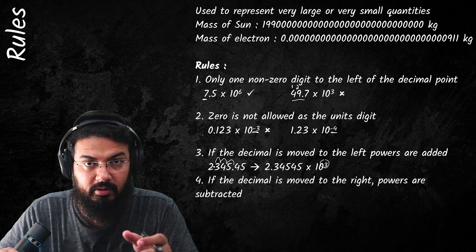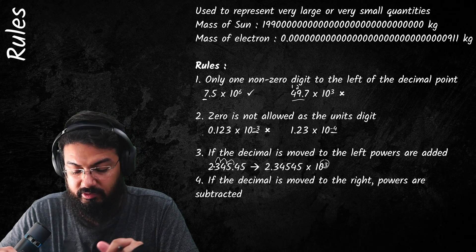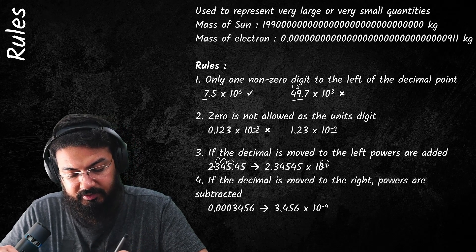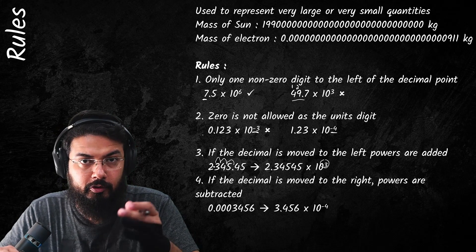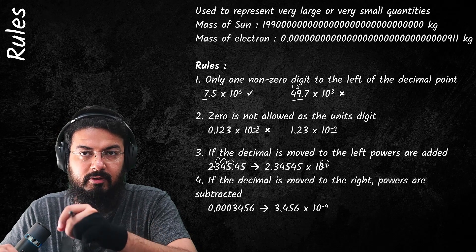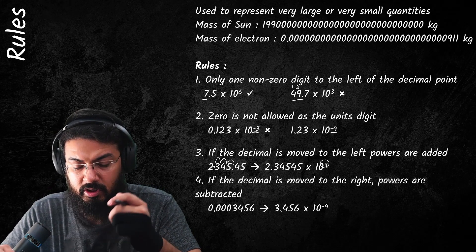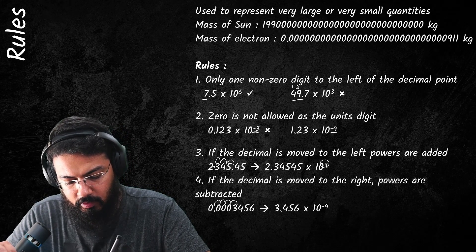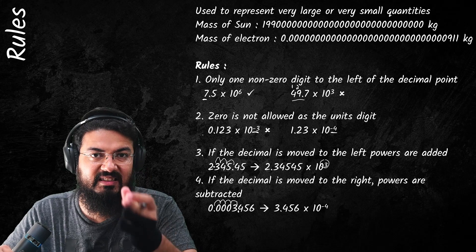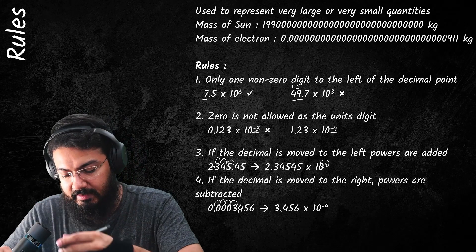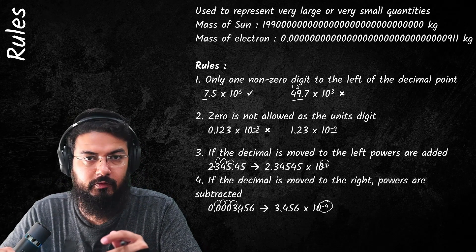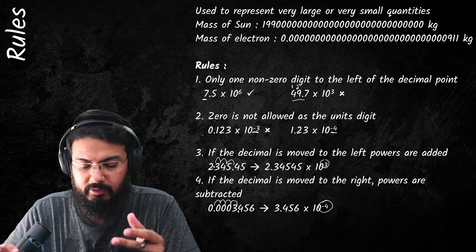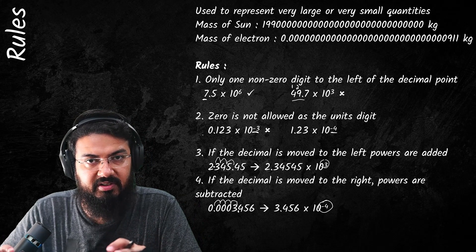On the other hand, if you move the decimal place to the right, you subtract powers of 10. For example, with 0.0003456, you need to move to the right to bring the decimal place after 3, since 3 is the first non-zero digit. That's one, two, three, four places — so because you moved four units to the right, you get the power minus 4.